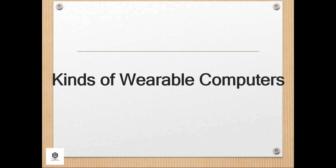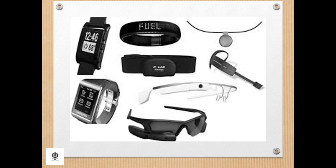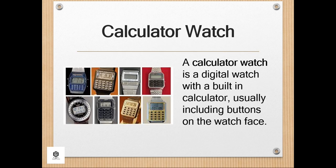Let's talk about the kinds of wearable computers. First, the calculator watch. A calculator watch is a digital watch with a built-in calculator, usually including buttons on the watch face. Calculator watches were first introduced in the 1970s and continued to be produced, despite falling from their peak popularity during the 1980s. The most notable brand is the Casio Data Bank series, though watches made by Timex are also popular.